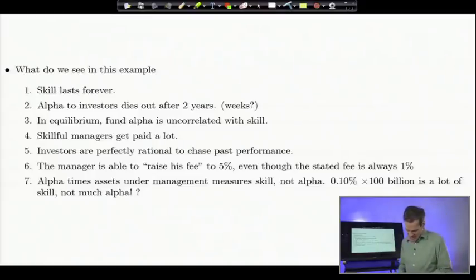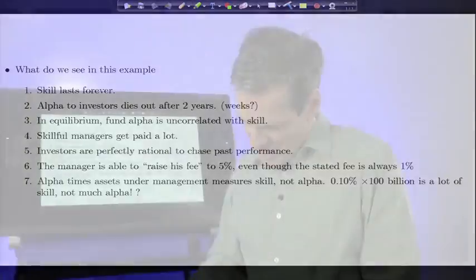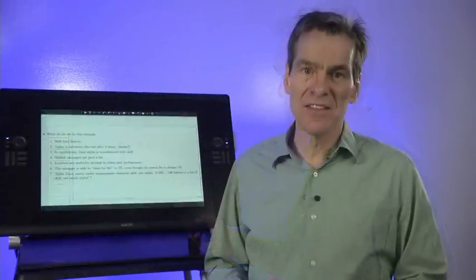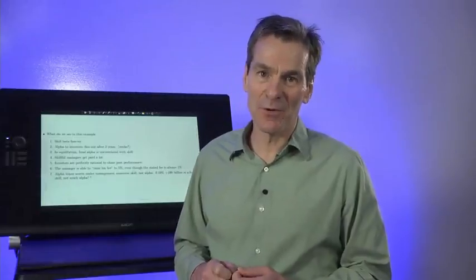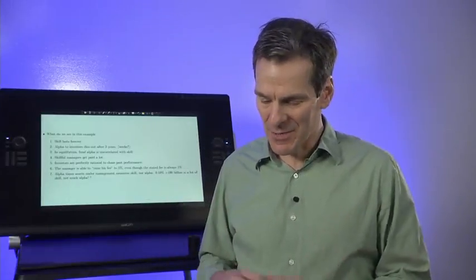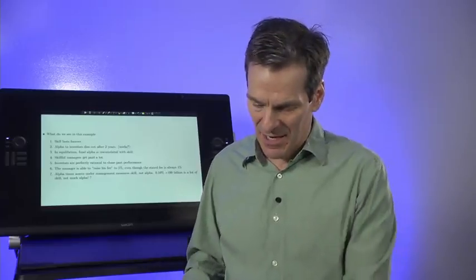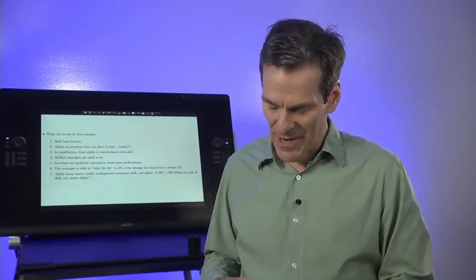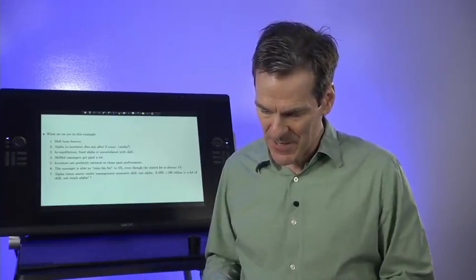If you can earn 10 basis points on $1 billion, call the University of Chicago with a check, because that's a lot of money. Now, this is the beginning of a road, not the end. We've just found a model that seems to explain all these things, at least at first glance, after 50 years of railing about irrationality. What are some of the problems here?